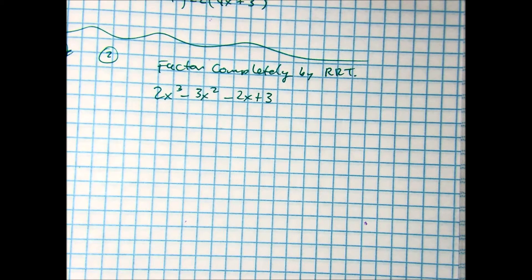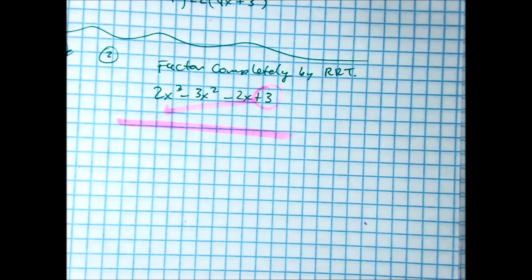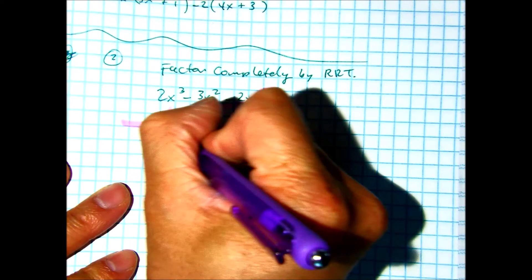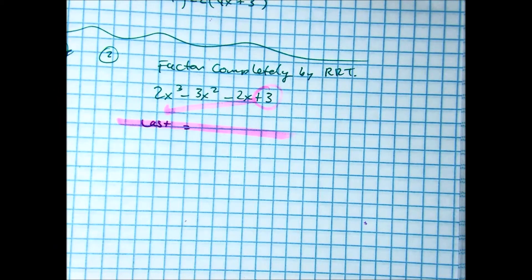What's the next thing you're going to do, Taylor? Our last term. Taylor, what are the factors of 3? 1 and 3.